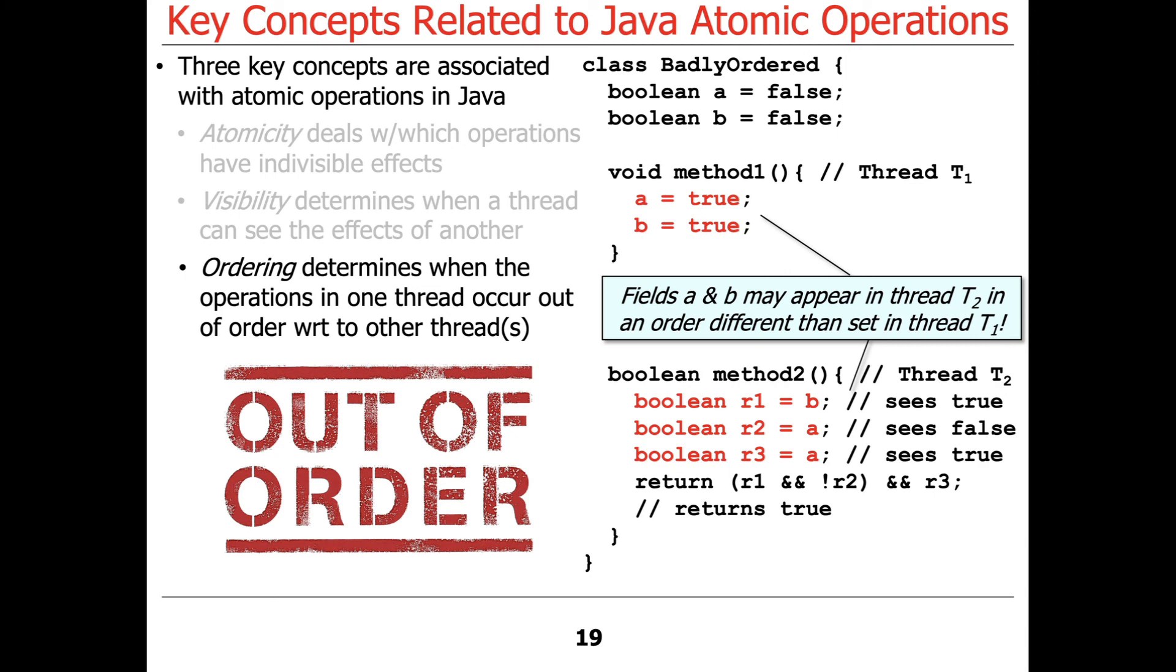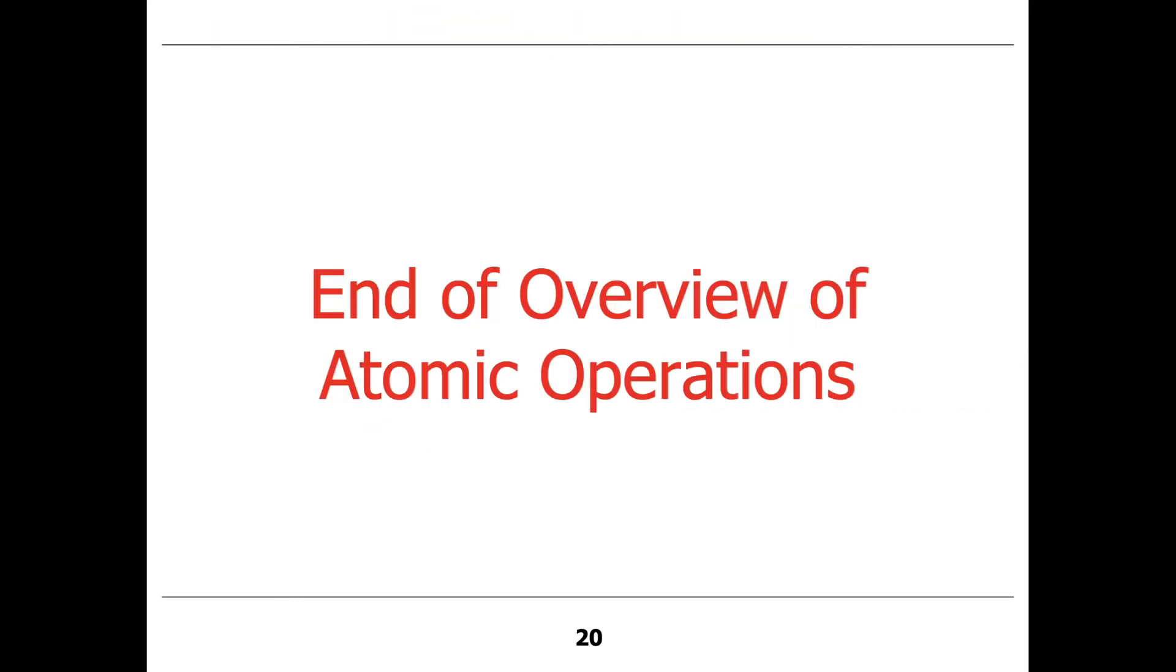And that's because we haven't indicated we want these things to be synchronized or atomic. That's the consequence of the weak, the intentionally weak memory model of Java.